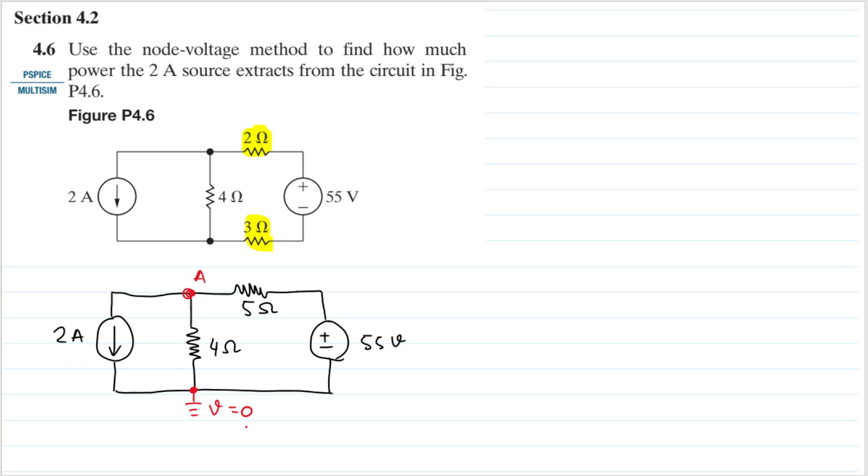Now let's assume the current directions from node A. This is a current source of 2 amperes - let's assume the current is going down. And then for the 4 ohm resistor, I think the current will go down.